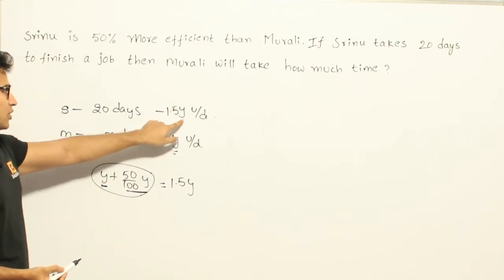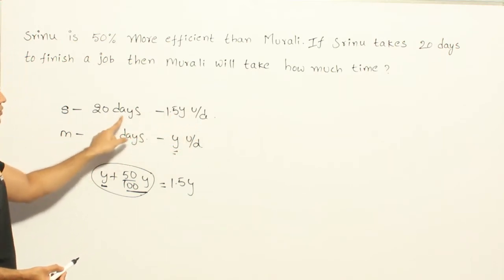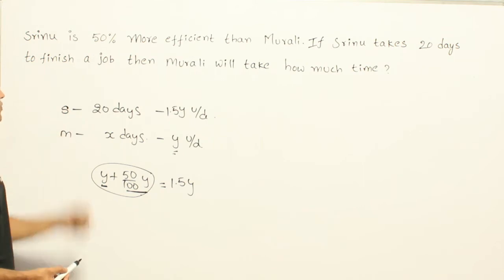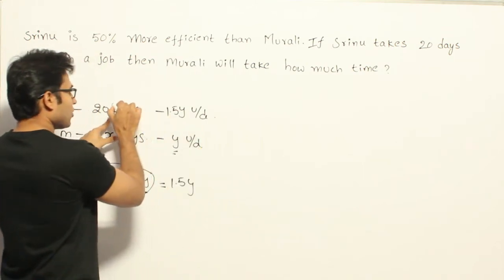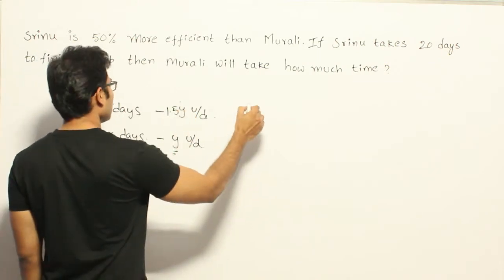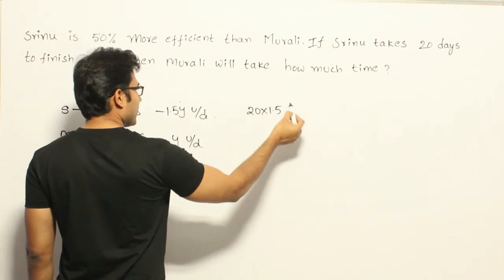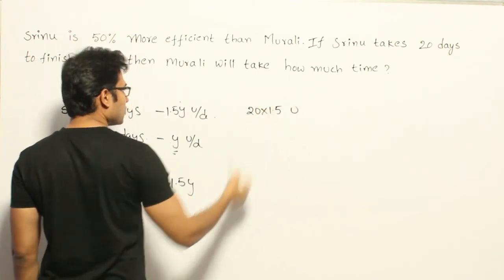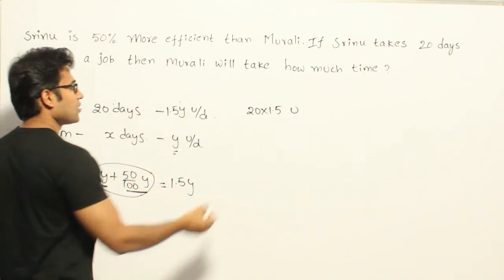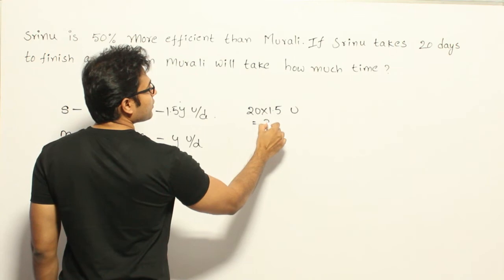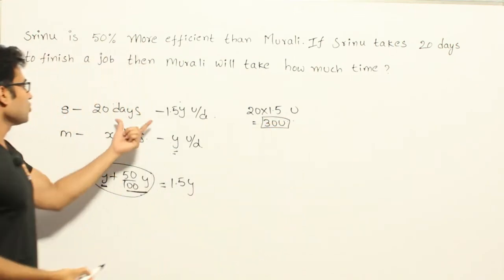By working at a rate of 1.5Y units per day, he is able to finish the work in 20 days. So what is the total work done by Sreedoo? The total work done by Sreedoo is equal to number of days into units per day, which is equal to 20 into 1.5Y. That gives us 30Y units as the total work.